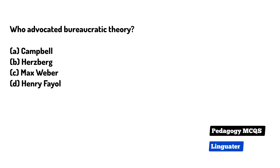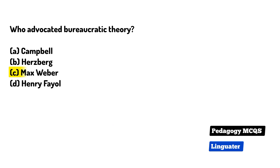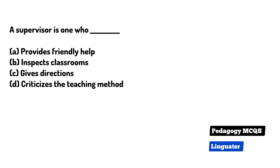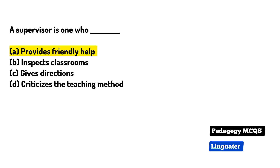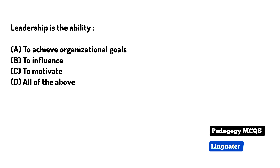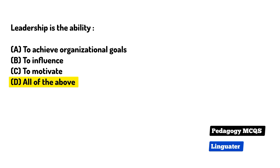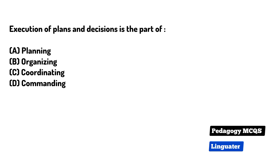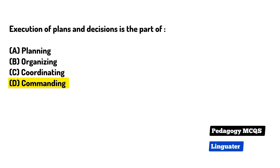Who advocated bureaucratic theory? The right answer is Max Weber. A supervisor is one who provides friendly help. Leadership is the ability — the right answer is all of the above. Execution of plans and decisions is the part of commanding.